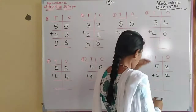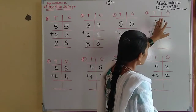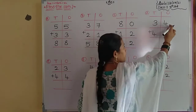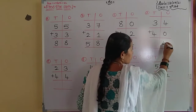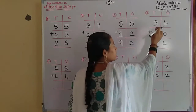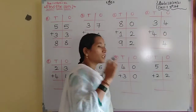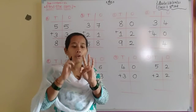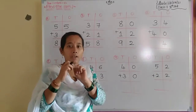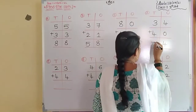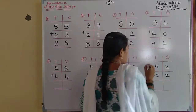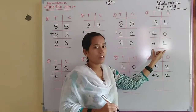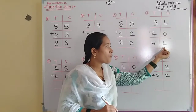Next problem: 34 plus 40. Add the ones placement first: 4 plus 0 equals 4, because of the zero property. Then tens placement: 3 plus 4 — take 3 in your mind, count forward: 4, 5, 6, 7. The answer is 7 in the tens place. Total sum is 74.